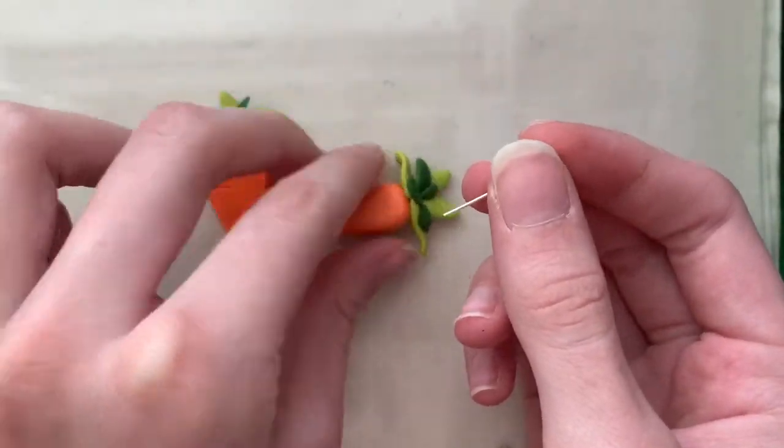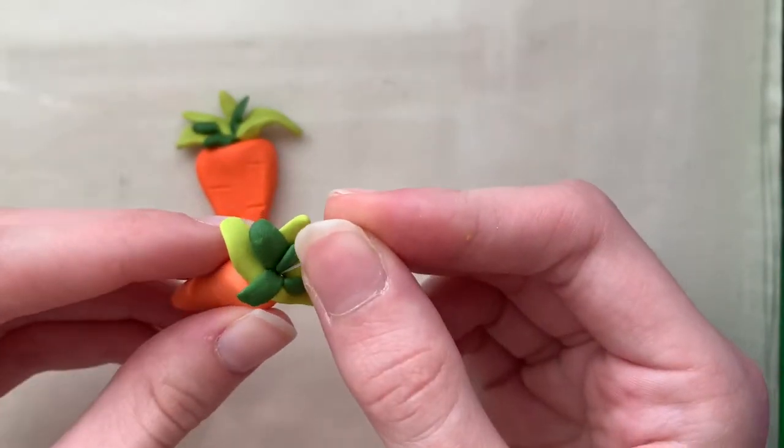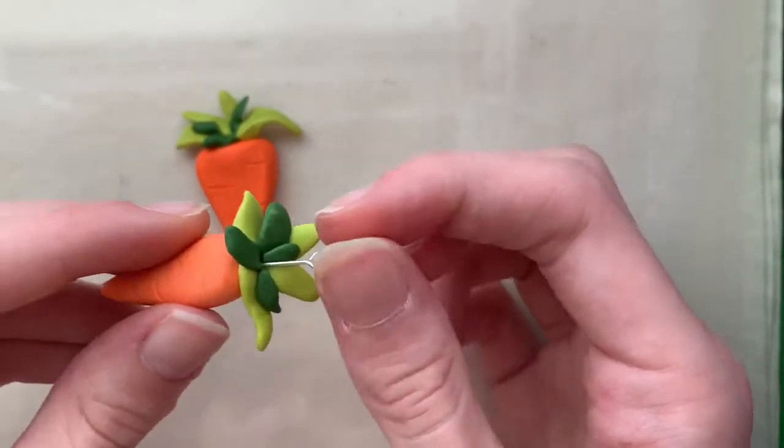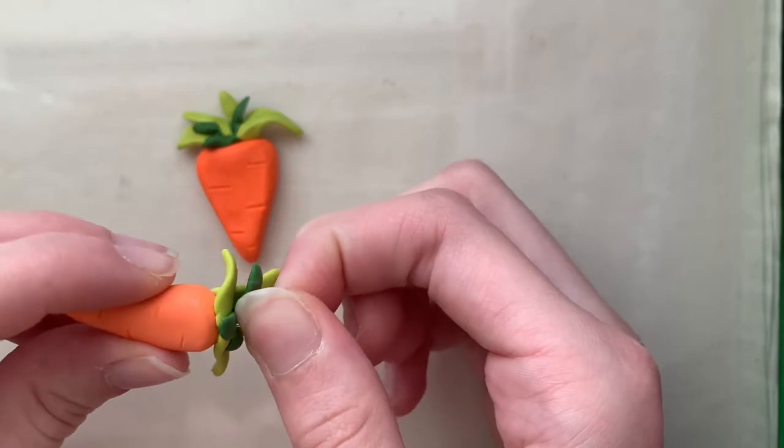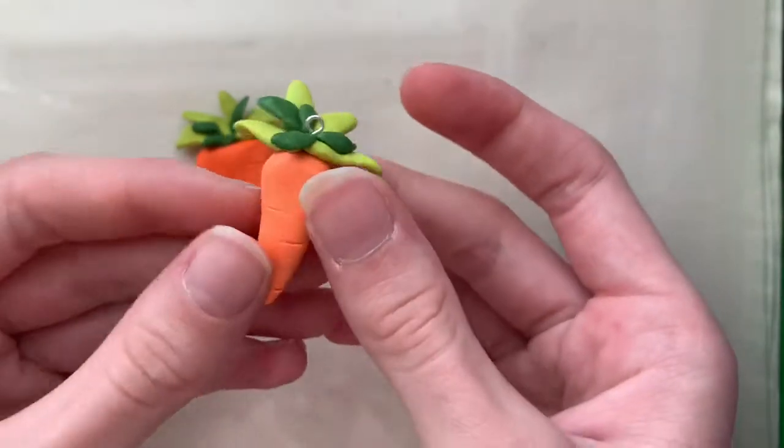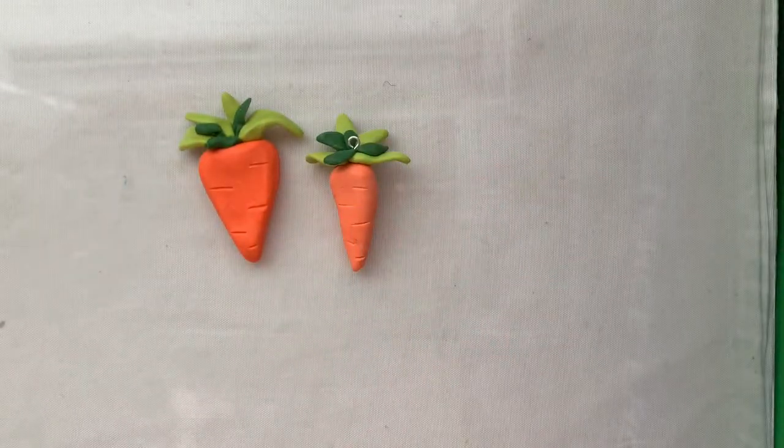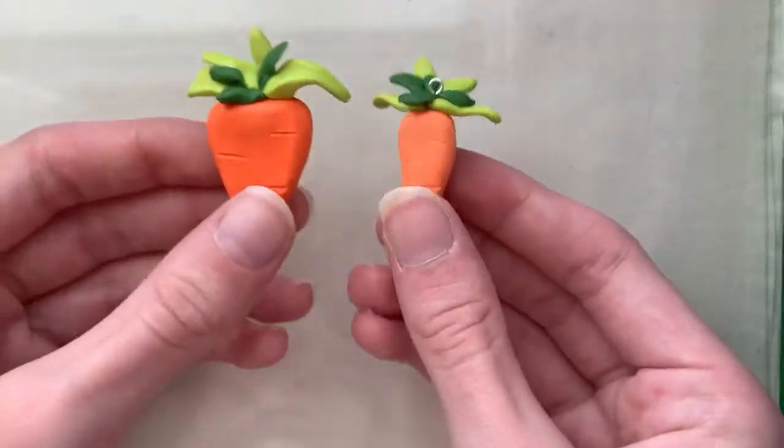If you want one to be a charm, you're going to get a hook and put it to the top of the carrot. Now take them to the oven. Bake at 250 degrees until they get hard.